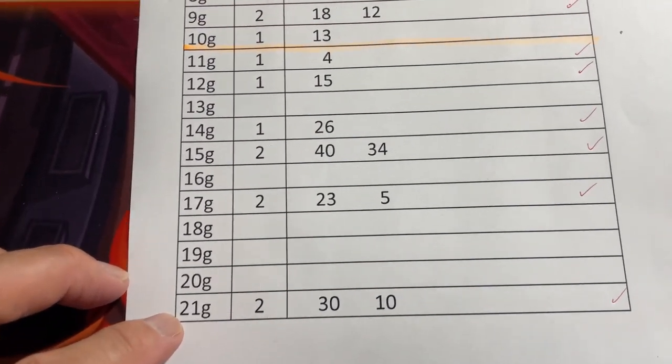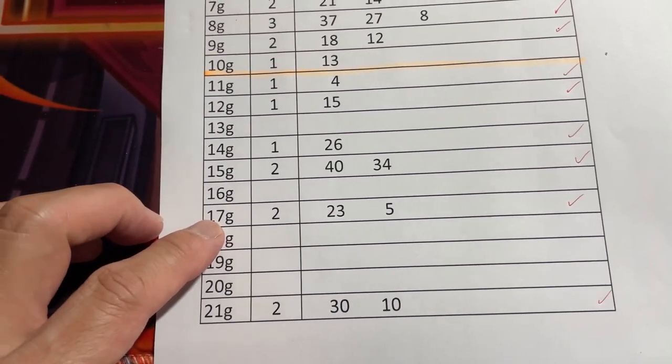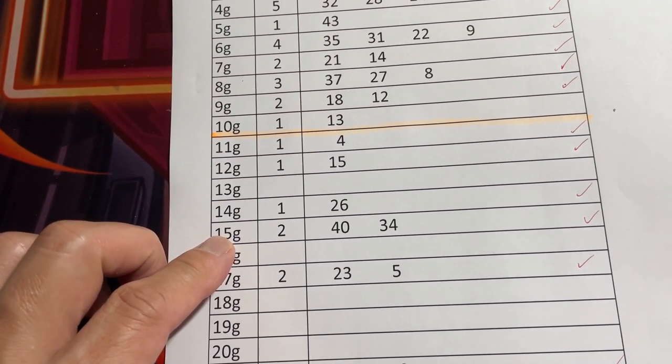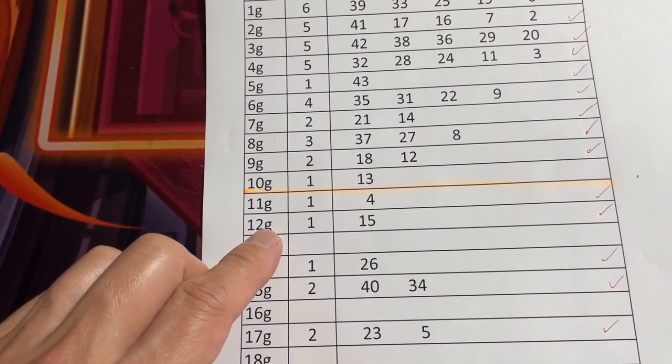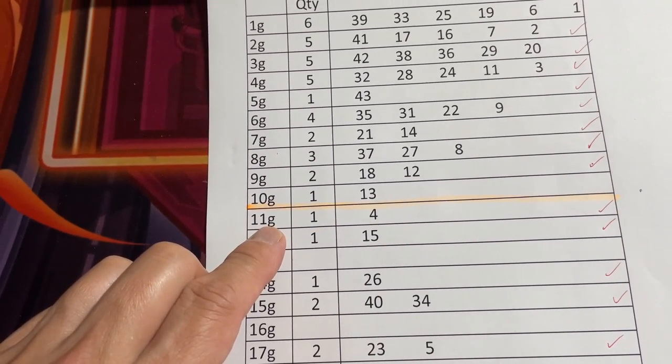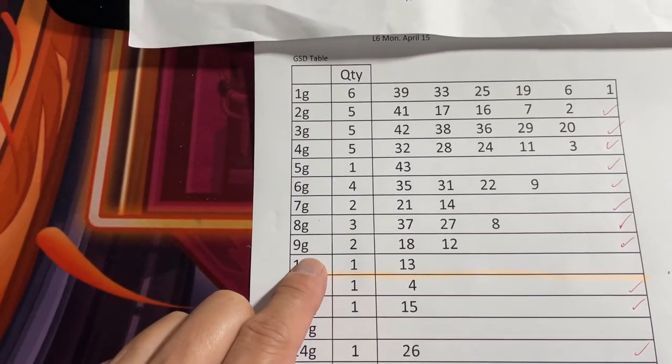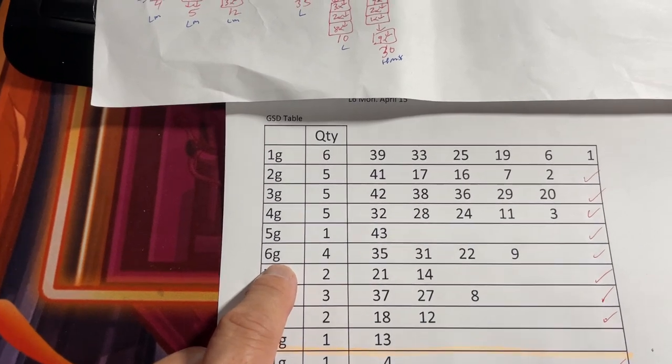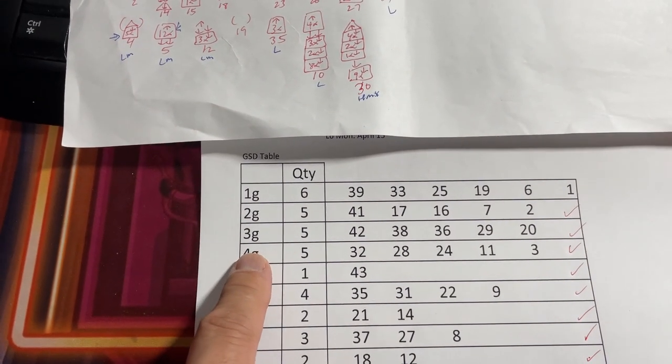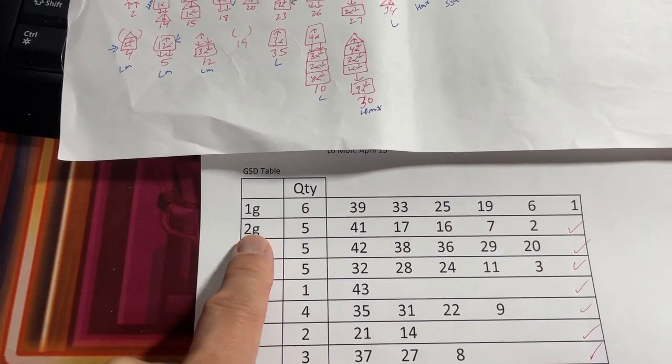I like numbers from 21G tier, 17G, 15G, 14G, 12G, 11G. In addition, I like numbers from 9G, 8G, 7G, 6G, 5G, 4G, 3G, 2G.